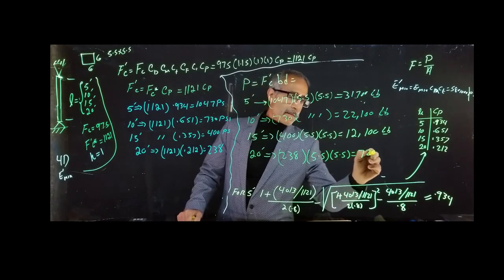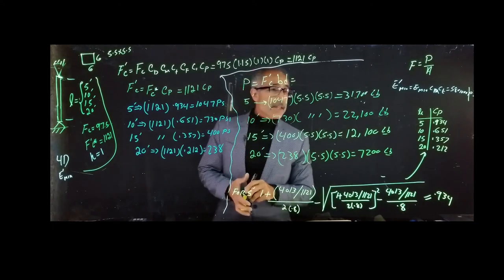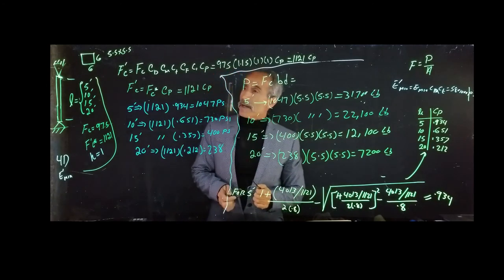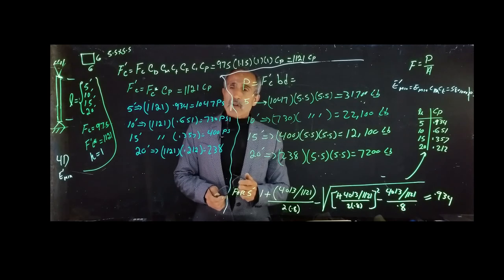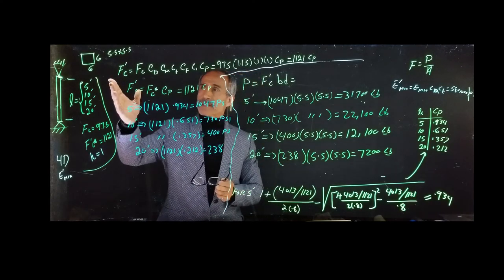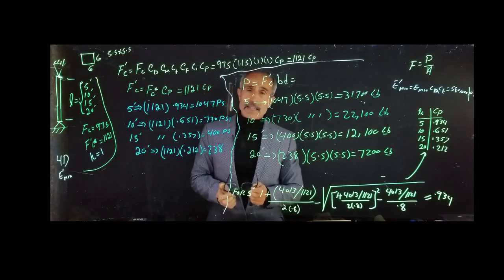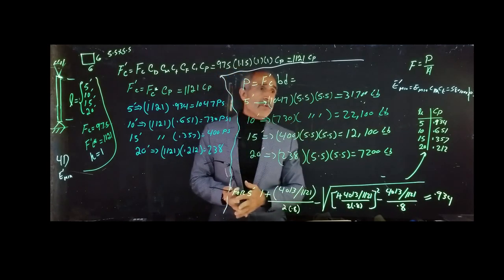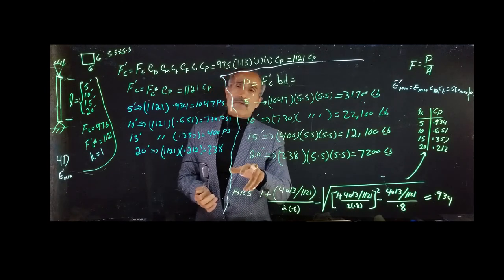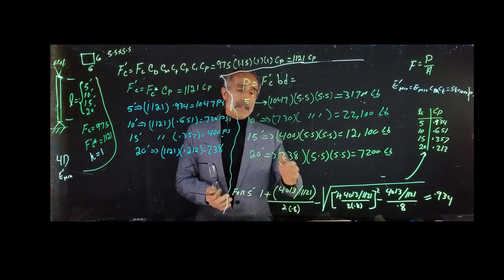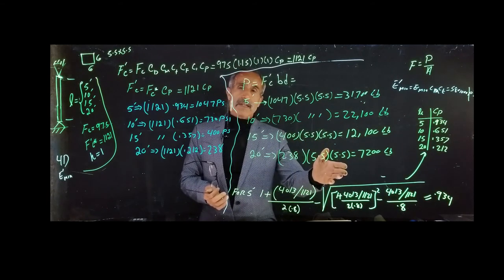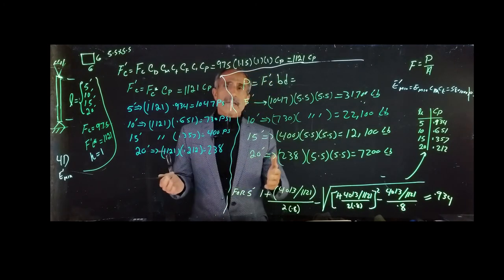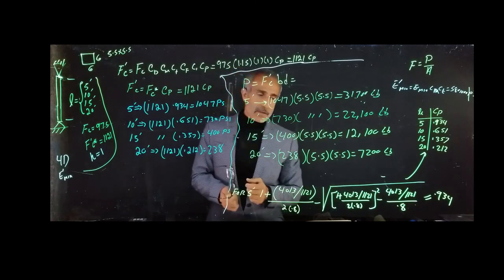This is really important because it tells you, as an engineer, what the maximum load a 6x6 timber — actual size 5.5×5.5 — can take. If someone asks and you give a wrong answer saying it can take 31,700 lb, but they use it for a 20-foot section with a balcony on top, that's going to fail due to buckling. Buckling is a huge issue unless you brace the column sideways sufficiently.